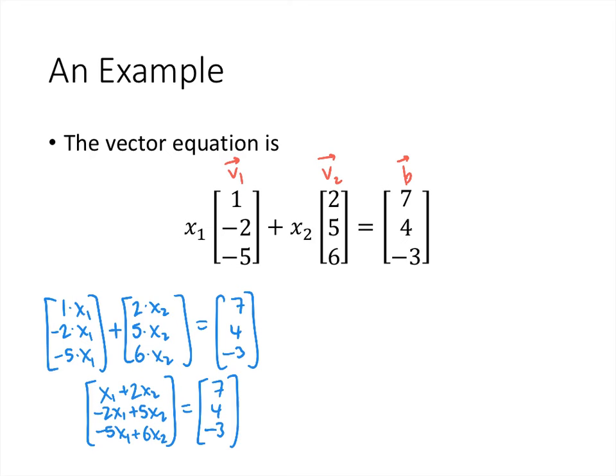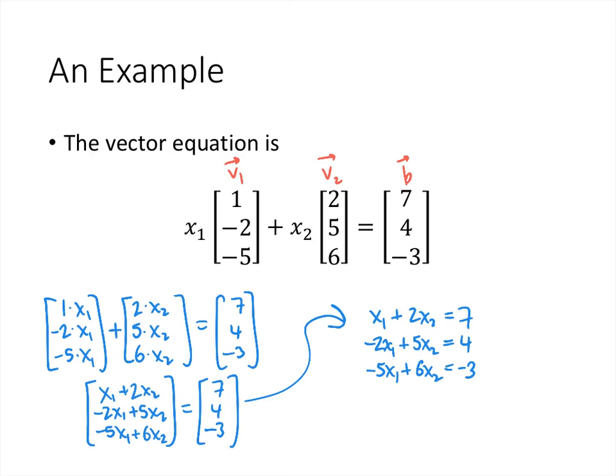For those two vectors to be equal, all corresponding entries must match. That means x1 + 2x2 = 7, -2x1 + 5x2 = 4, and -5x1 + 6x2 = -3. That's a system of linear equations — three equations with two variables — and the question is whether this system has a solution. We know how to answer that.